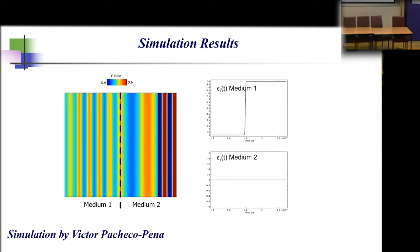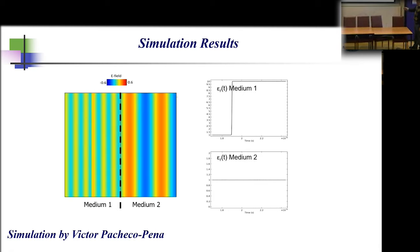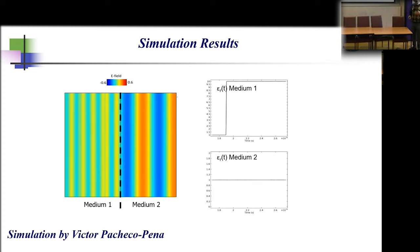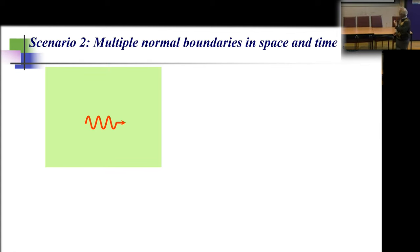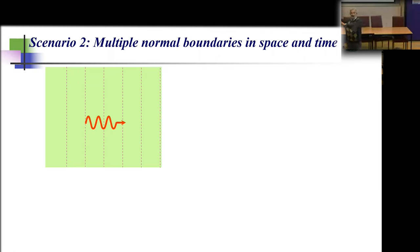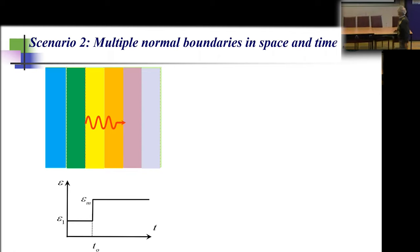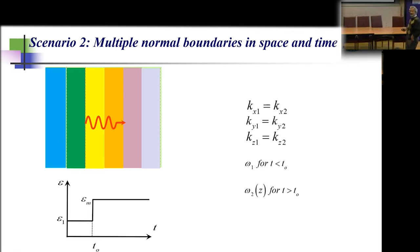Scenario two uses the same concept but with multiple layers. Starting with a uniform material and a monochromatic wave, at t = t₀ we change the permittivity of each region differently. This generates different frequencies in all regions, which then move and change wavelength when entering neighboring media. At different locations in space, we create different frequencies — a very interesting frequency modulation.